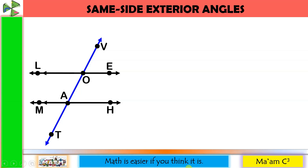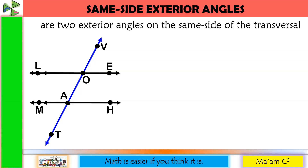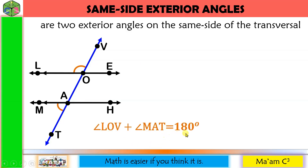The next one is same-side exterior angles. These are two exterior angles on the same side of the transversal. Here is our transversal. The exterior portions are above and below the parallel lines. Let's have first on the left side — this one — and its partner will be this one. Angle LOV and angle MAT are same-side exterior angles, and when you add these two angles, it will equal 180 degrees.